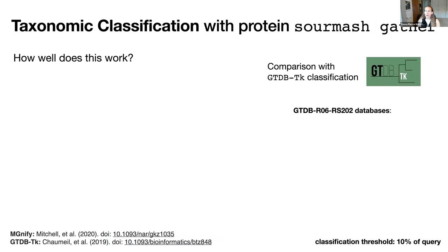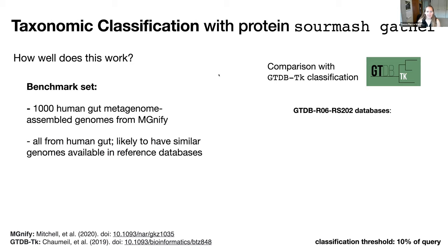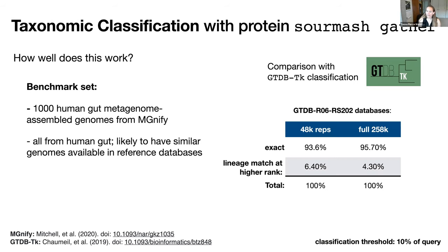So how well does this work? We did a comparison with GTDB-TK, starting with a benchmark set of 1000 human gut metagenome-assembled genomes. These are all likely to have similar genomes available in reference databases. We found exact lineage matches for about 95% when using the full GTDB recent release, and the additional ~4% all matched at the genus level. We think it's doing pretty well, even though we're currently using a very naive classification threshold of 10% of the query.